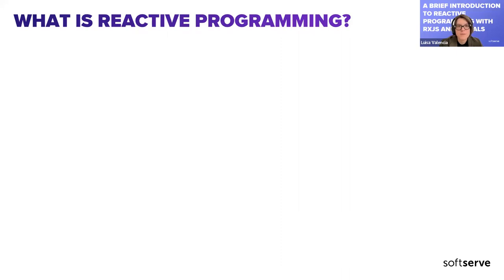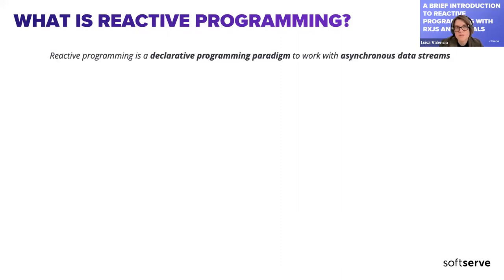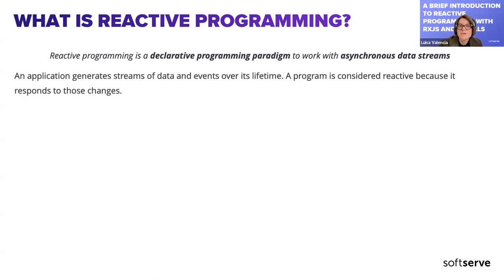What is reactive programming? Reactive programming is a declarative programming paradigm for working with asynchronous data streams. An application generates streams of data and events over its lifetime, and a program is considered reactive because it responds to those changes.